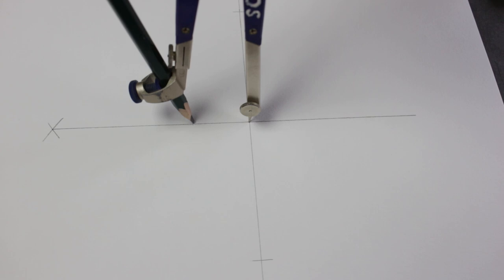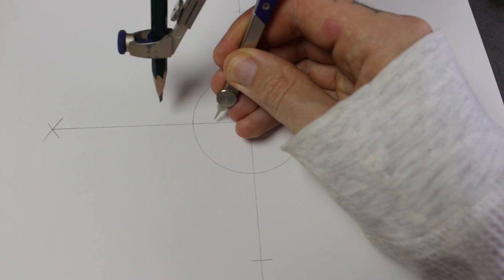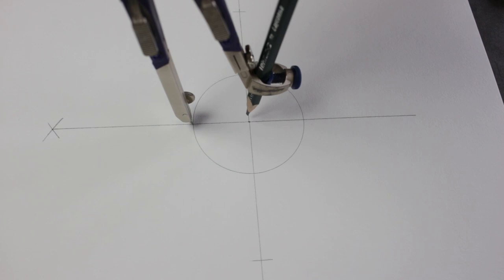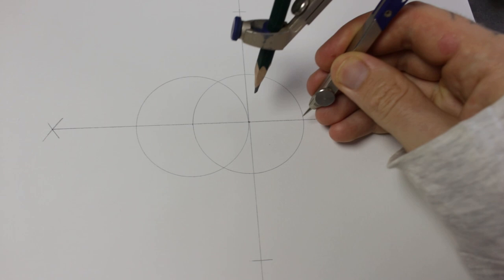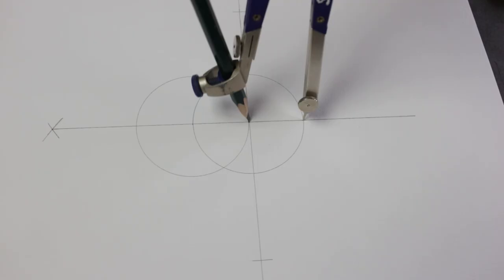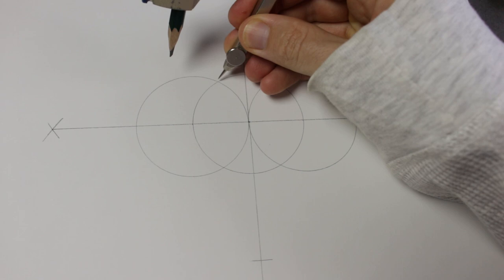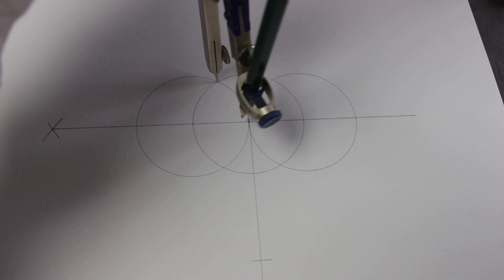We're gonna draw the seed of life right in the middle. Now we follow this line to this intersection on the left and we'll draw another circle. We'll do the same thing on the right and then I'm going to use these four points to draw more circles.